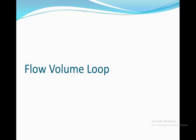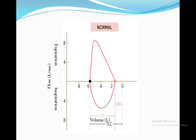The flow volume loop is used to identify obstructive disease, and it is shown in the form of a graph. On the y-axis, it shows the flow at which you breathe in and out, measured in litres per second. On the x-axis, it shows the volume of air in the lungs during inhalation and exhalation. As you go from left to right, the lung deflates. We begin with the inspiratory phase, starting at 1.5 litres in volume. The reason we don't start from zero litres is because the air left over from the previous expiratory phase — the residual volume — takes up that part.